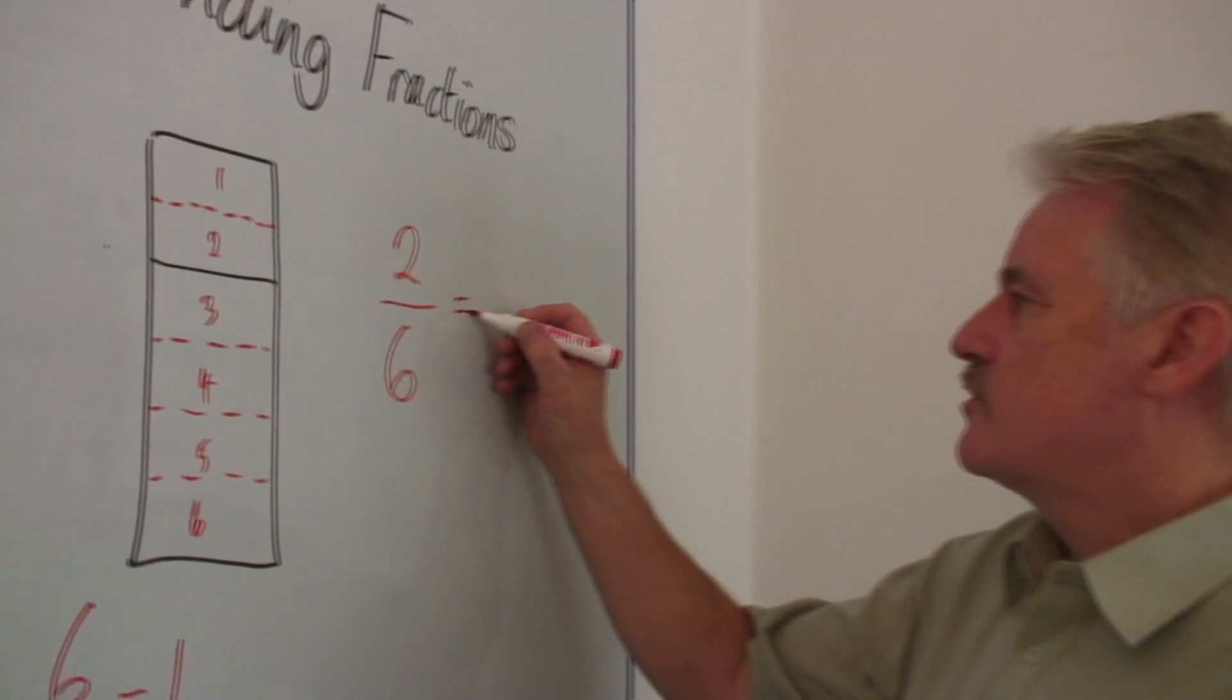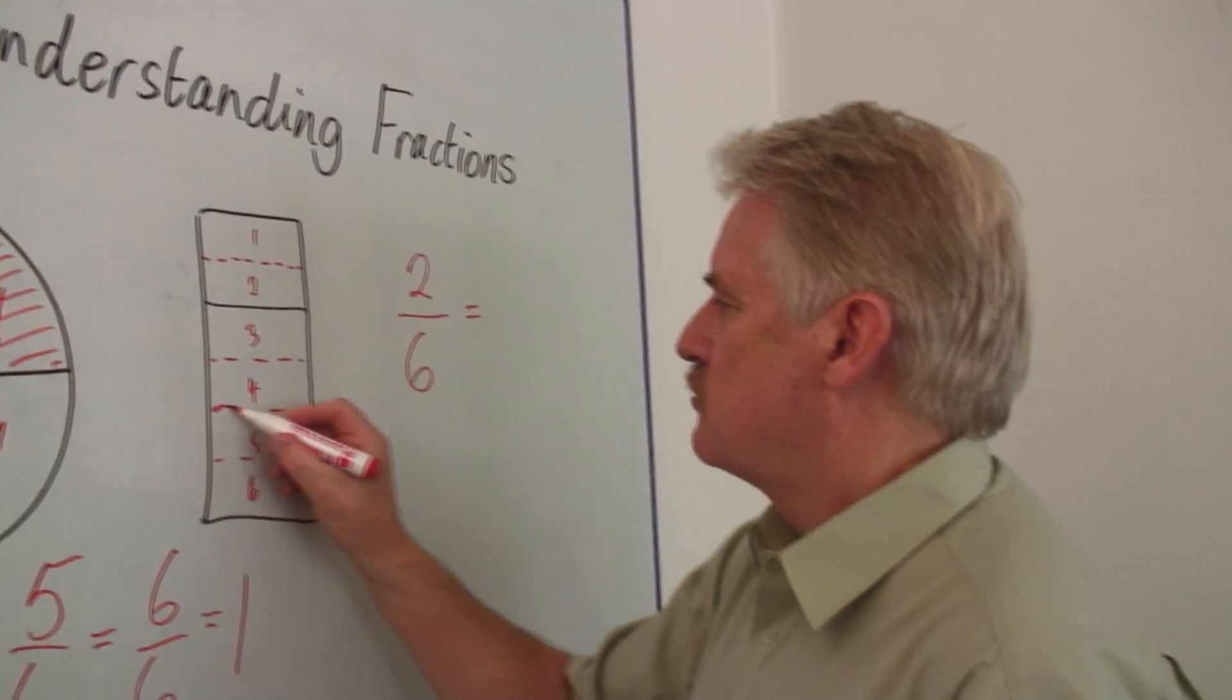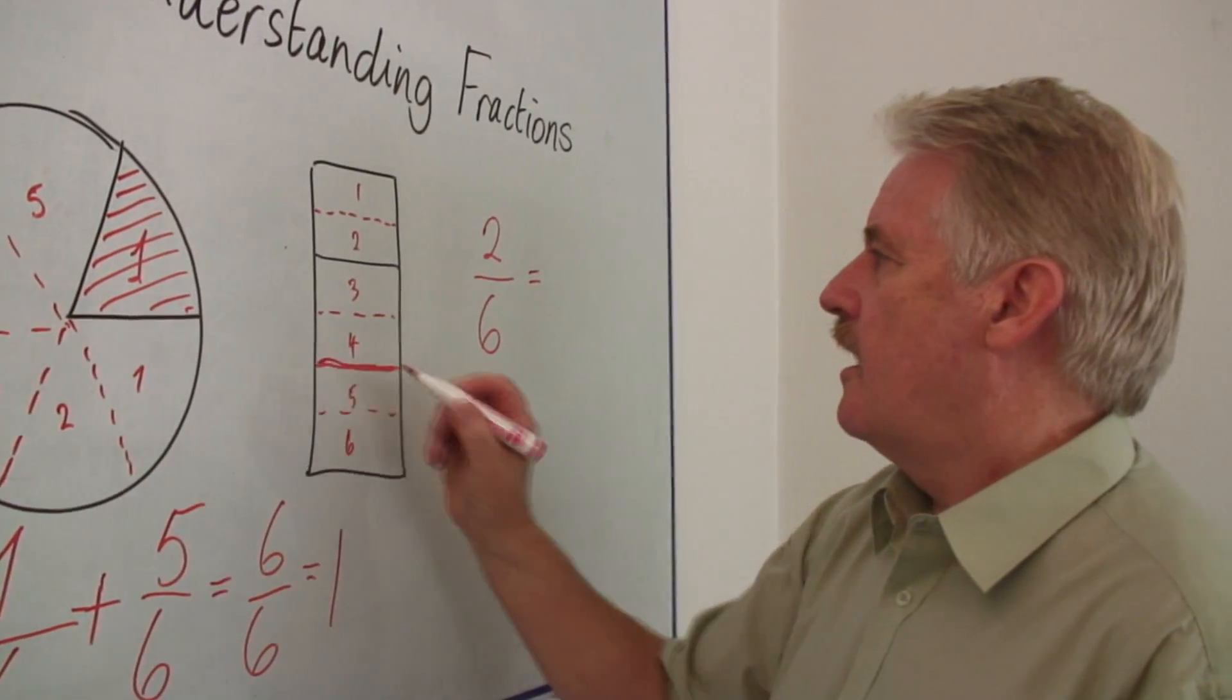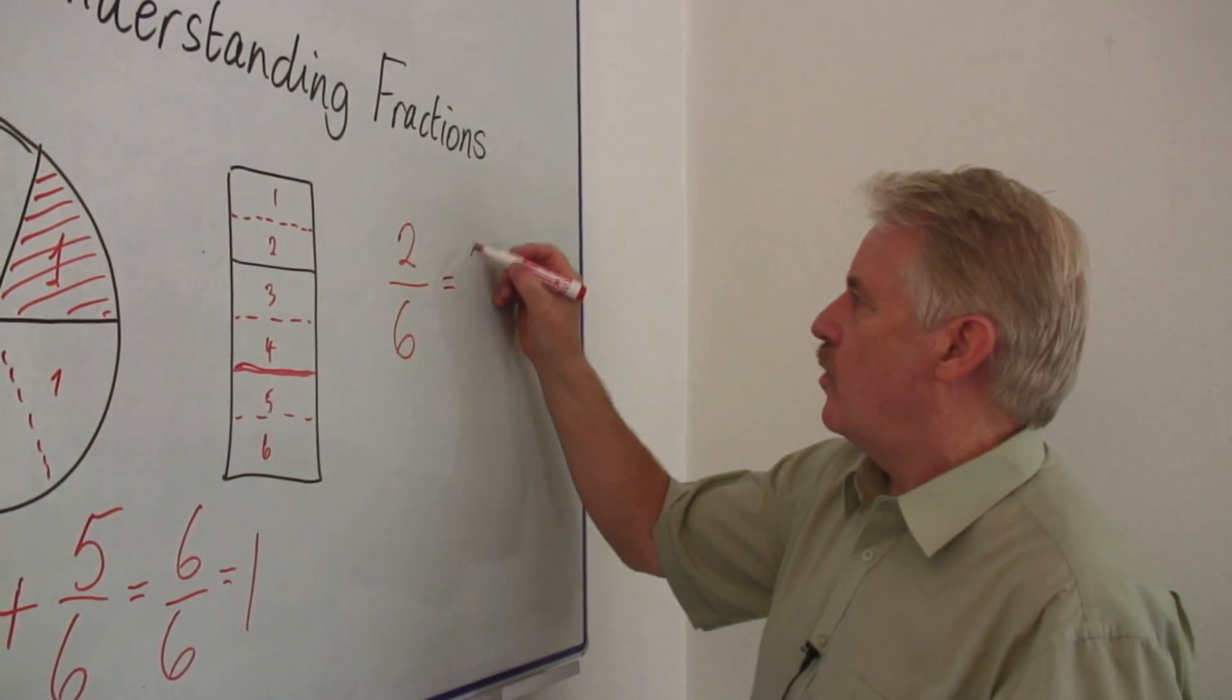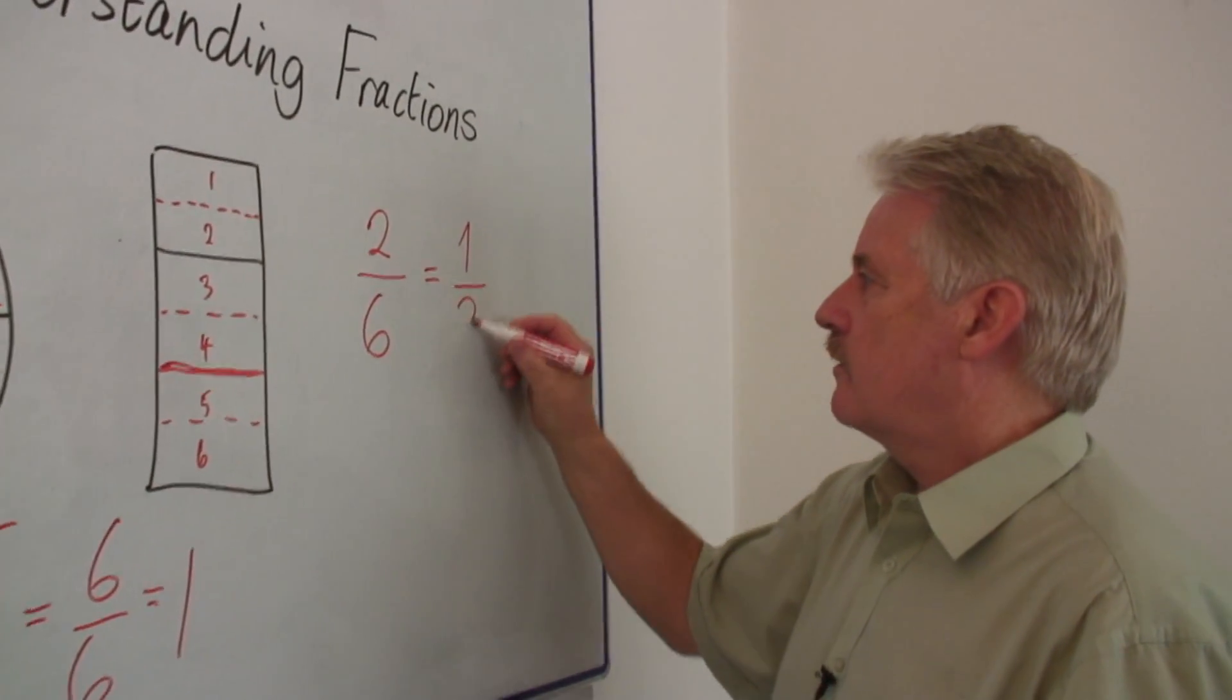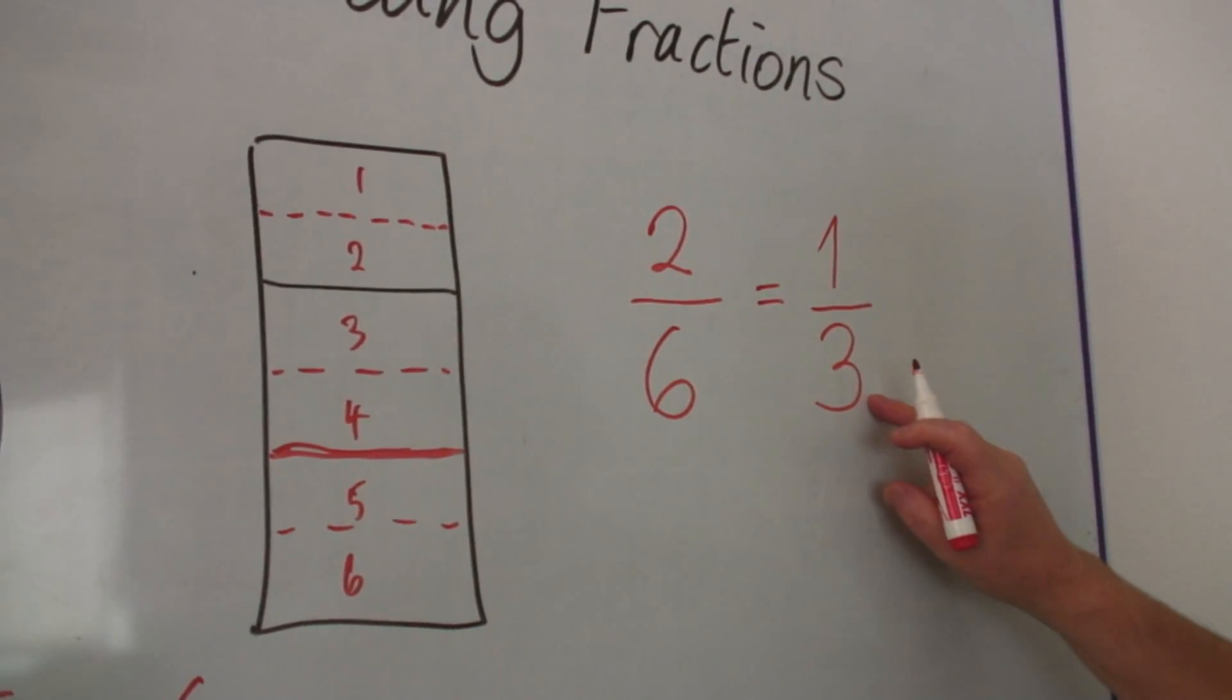Well, two sixths is, I could also draw a strong line there. And I've got one of these here, and two there. So it's one out of three. So two sixths is the same as one third.